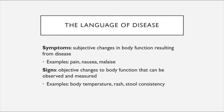Signs are objective changes to body function that can be observed and measured outwardly by a clinician. When you think of signs versus symptoms, think of the phrase 'vital signs,' which refers to things that can be measured. For example, body temperature is a vital sign. A rash would also be a sign because it can be objectively observed and measured, as well as stool consistency.